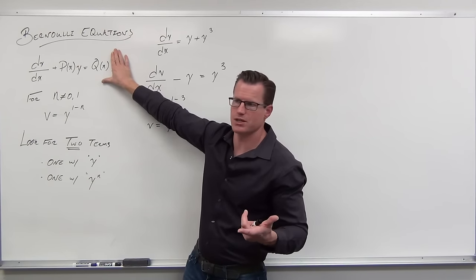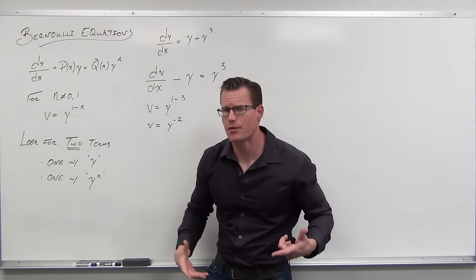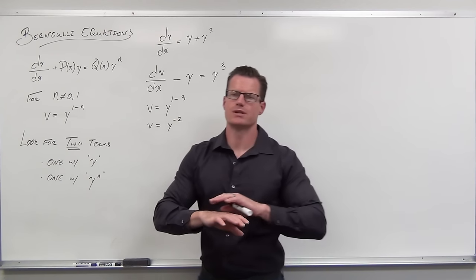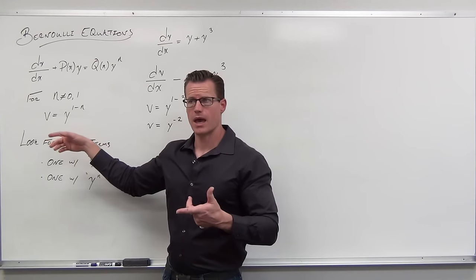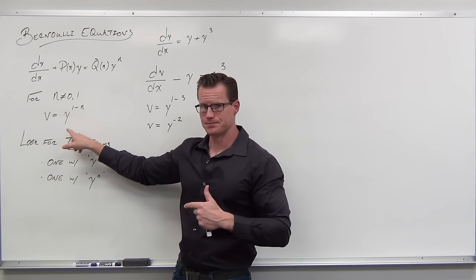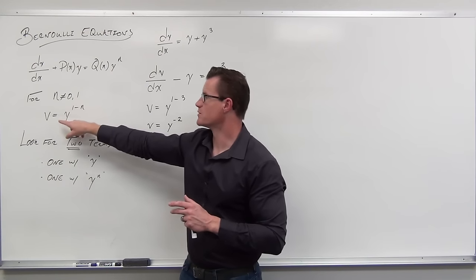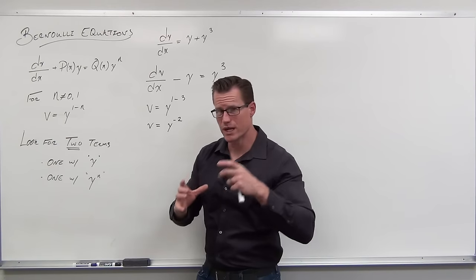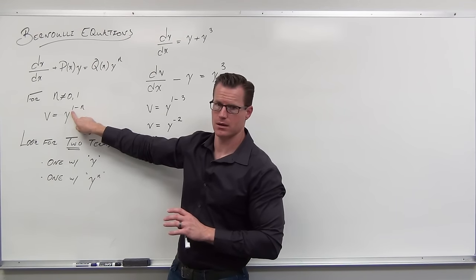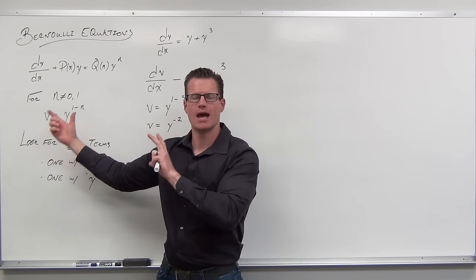If we have a Bernoulli equation — with a derivative with respect to x, y to the first power on one side just like every linear — but we also have another function of x with other y's, that's what creates the Bernoulli equation rather than just a linear. If I erase that extra term, it's a linear differential equation we can solve. But with this, we need to get rid of that term. If we make the substitution v equals y to the one minus n and solve for y, then take a derivative dy/dx to replace dy/dx, we'll get some function of v times dv/dx.